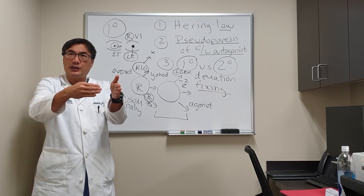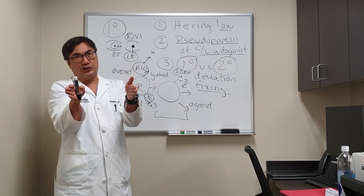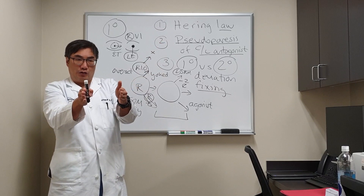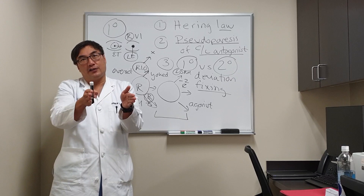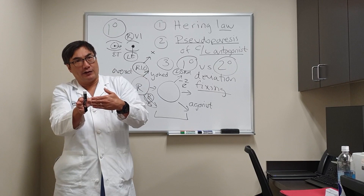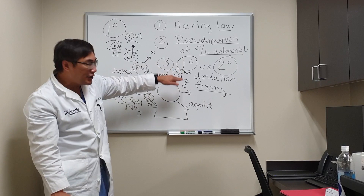However, some people choose to fixate with the paretic eye, either because they see better in that eye or it happens to be their dominant eye. If that were to occur, the right eye takes more innervational effort to get to midline, and that will be transmitted by Hering's Law to the yoke muscle — the yoke of the right lateral rectus is the left medial rectus. Because it took so much more innervational effort to get the right eye to midline, that extra effort is transmitted to the left medial rectus and the deviation will be larger. The secondary deviation is always larger than the primary deviation.